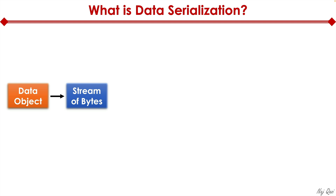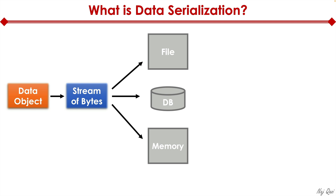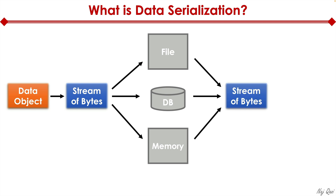Why would we want to convert that object into a stream of bytes? We want to allow that data to be stored, transferred, and distributed — through files, databases, memory. And then from those resources, we take that stream of bytes and convert it back into an object on the destination end. This entire path from left to right is called data serialization.